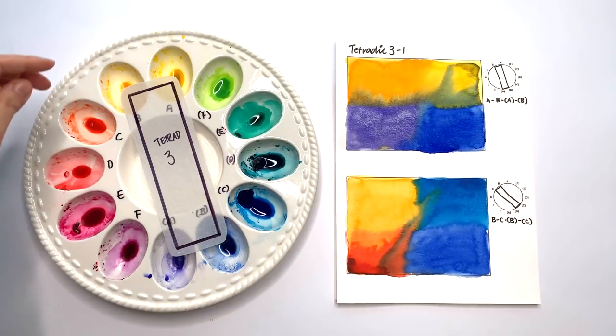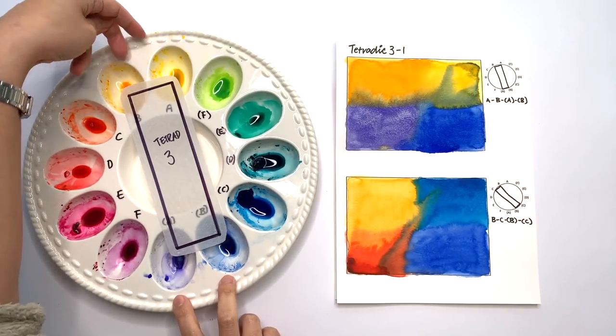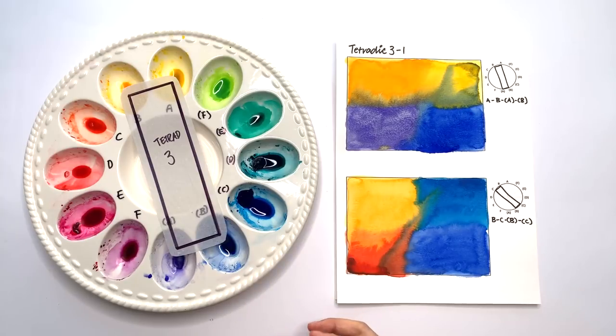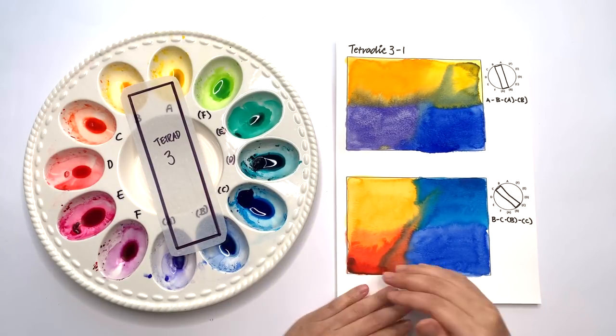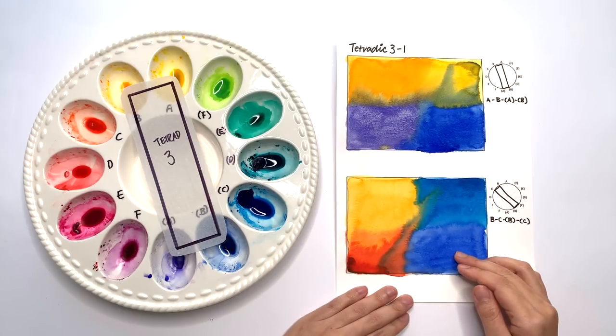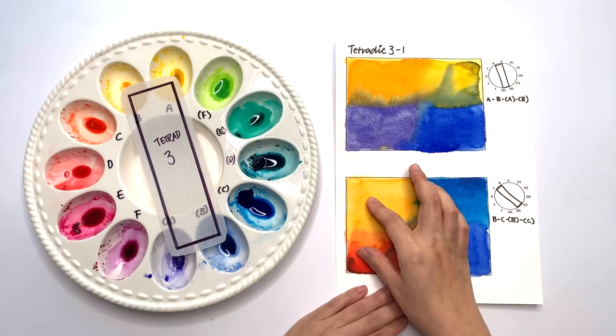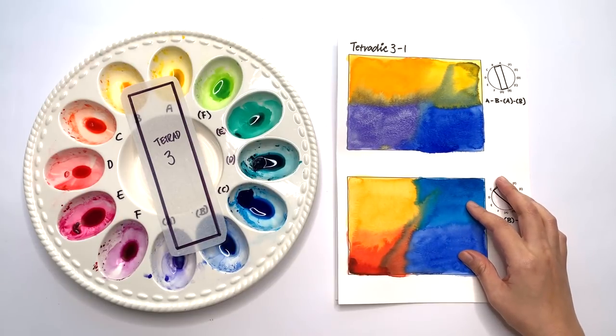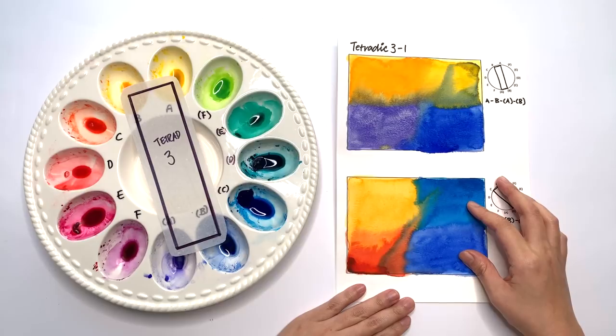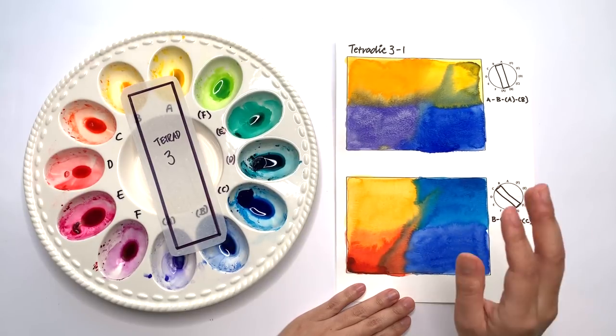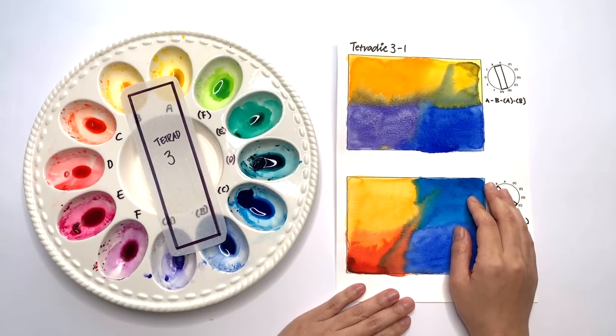Because you have two pairs that are right next to each other the color scheme feels a little bit more harmonious. You still have the two pairs of complementary colors vibrating off each other, but you also have two colors that are quite close and harmonious with each other. So let's have a look at what this tetrad looks like as a color scheme.